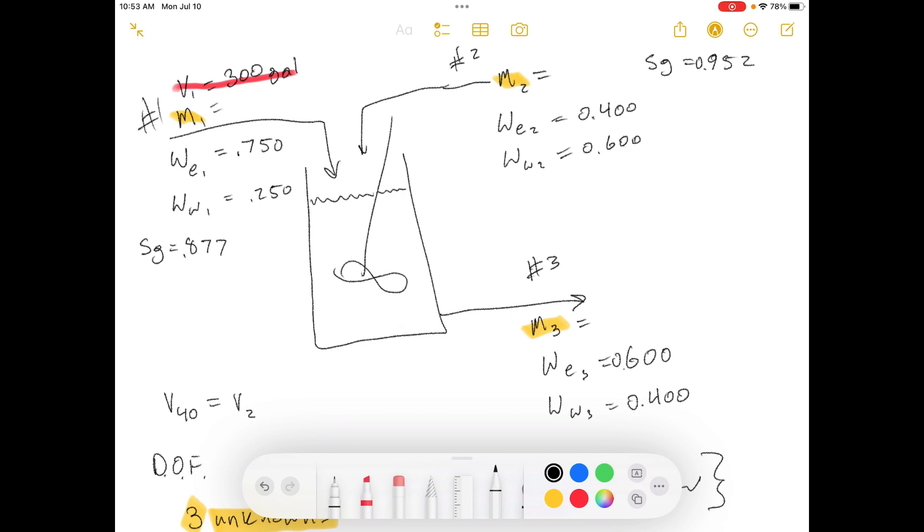Today we're working out of Elementary Principles of Chemical Processes, third edition, and we're doing problem number 4.10.